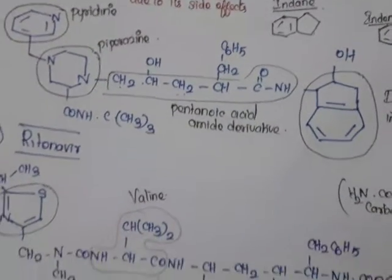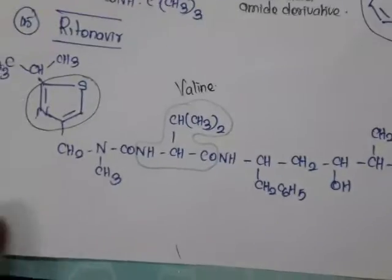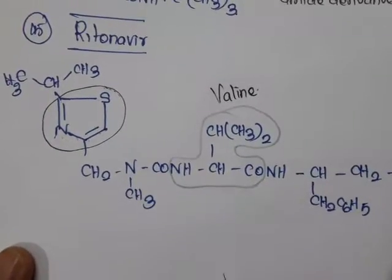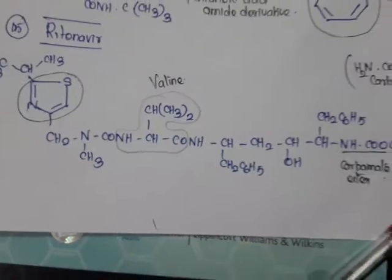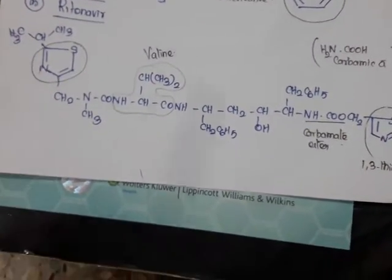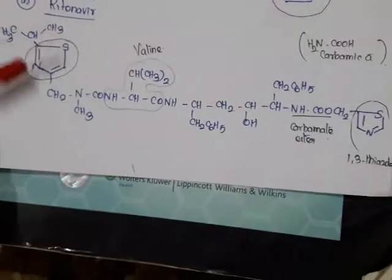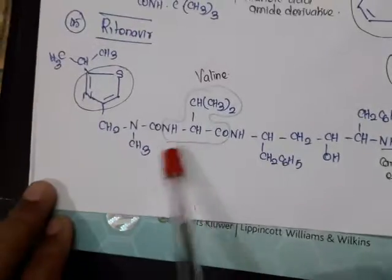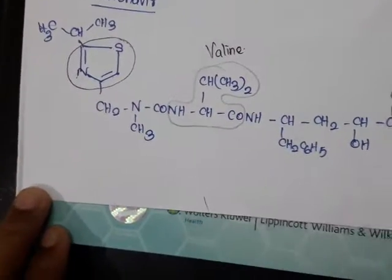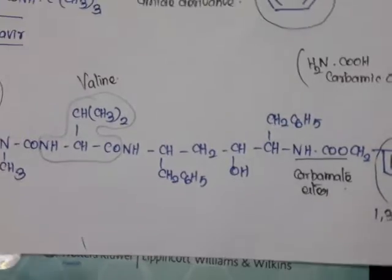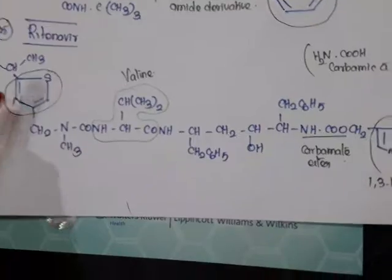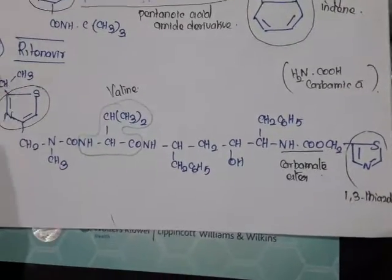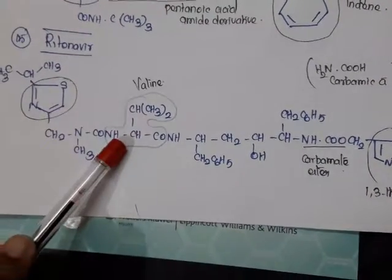The last drug is ritonavir. Its structure contains two 1,3-thiazole rings. In the 1,3-thiazole an isopropyl group is added. The structure also contains a valine-derived component within the ring and a carbamate ester. So ritonavir has two 1,3-thiazole rings with an isopropyl group, a valine residue, and a carbamate ester. That concludes the discussion of antiviral agents.